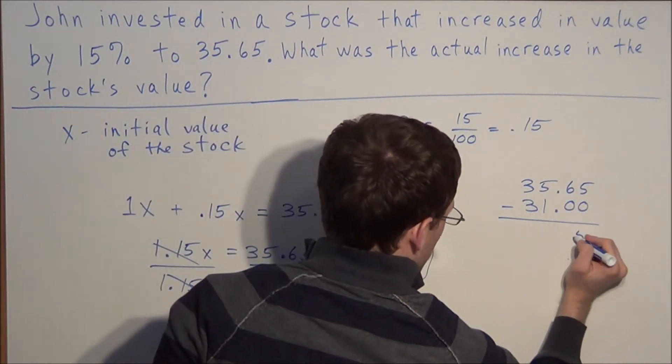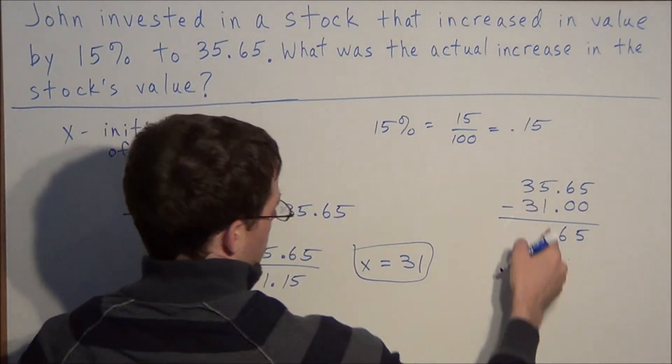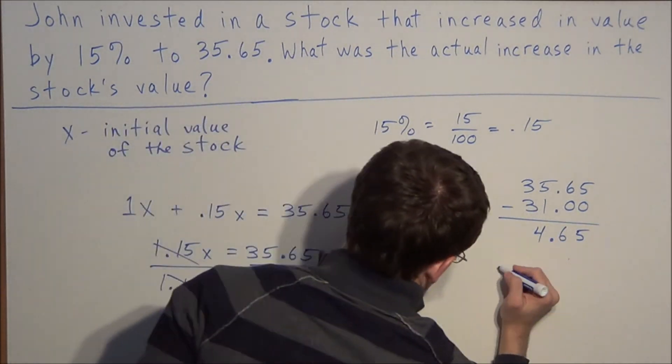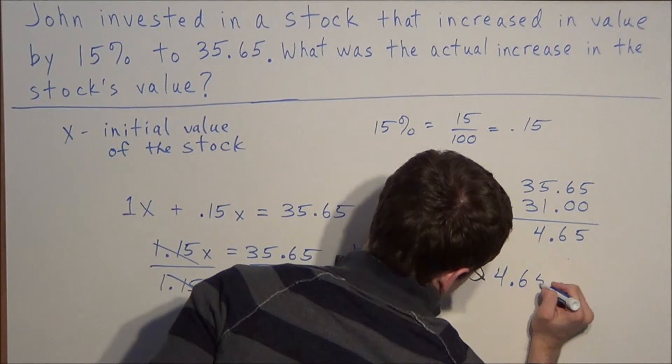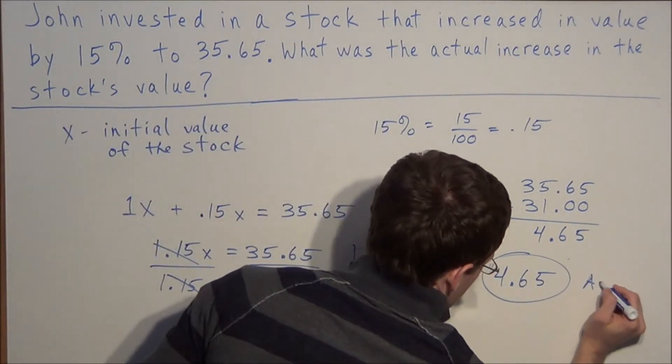you can put .00 at the end. 5 minus 0 is 5, 6 minus 0 is 6. We throw our decimal down, 5 minus 1 is 4, 3 minus 3 is 0. So this tells us that the stock increased 4.65 points. So this here would be our answer.